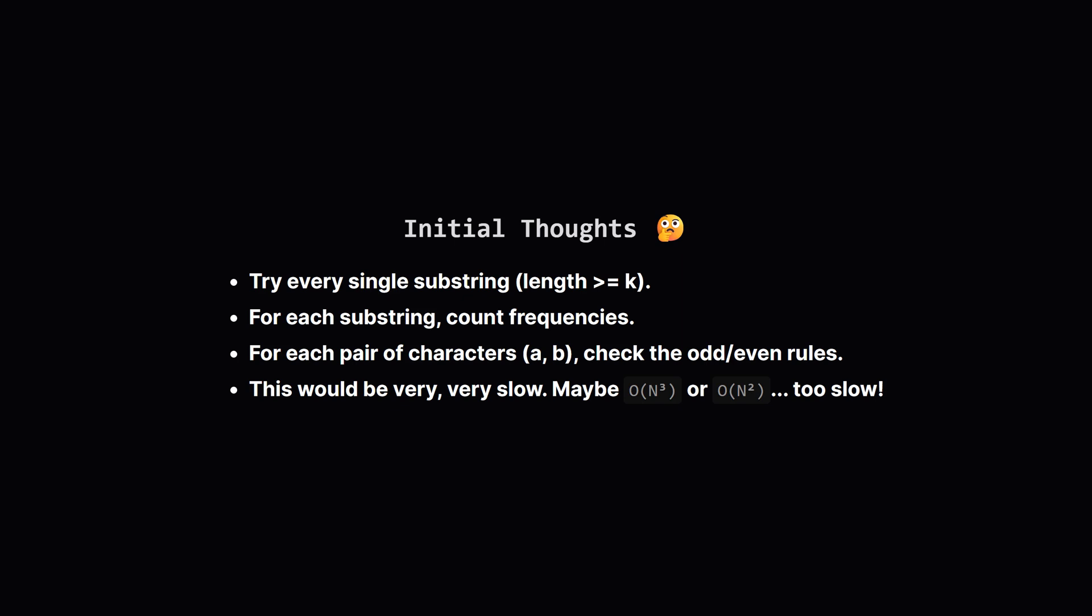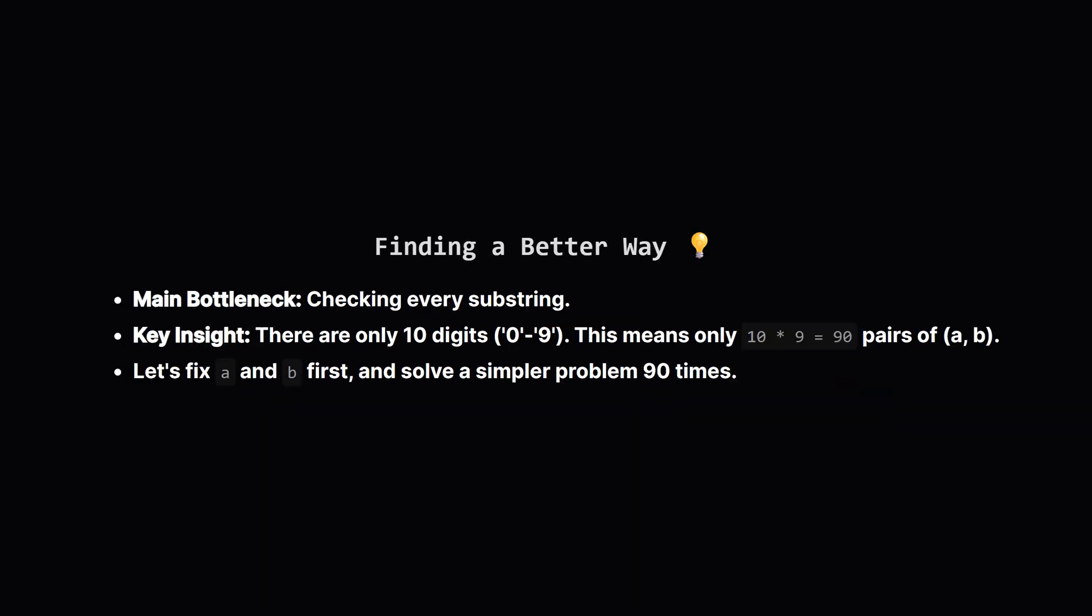What's the first idea that comes to mind? Well, the most straightforward approach is just to check everything. We could generate every single substring that's long enough. For each of those, we could count the frequencies of all the digits. Then, we could test every possible pair of characters A and B to see if they fit the odd even rules and calculate the score. But, if our string is long, this would take an enormous amount of time. We're talking about a complexity that's something like n squared or n cubed, where n is the length of the string. That's a clear signal that there's probably a much smarter, more efficient way to solve this.